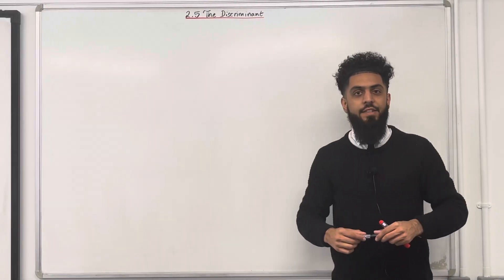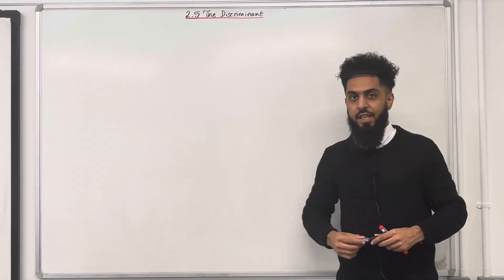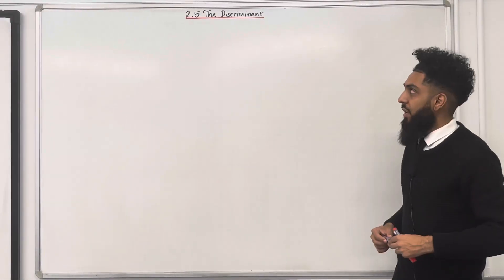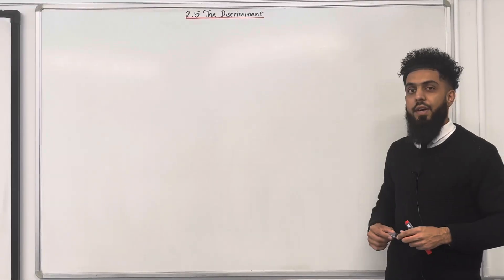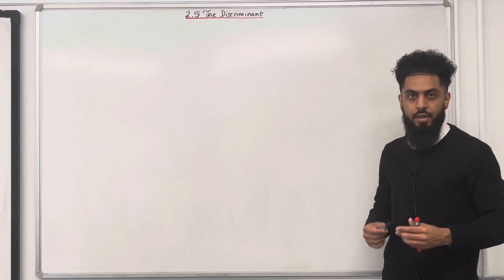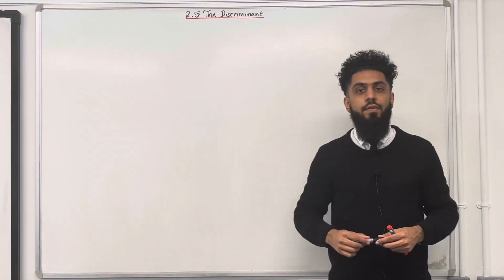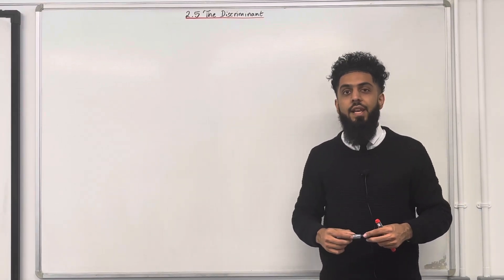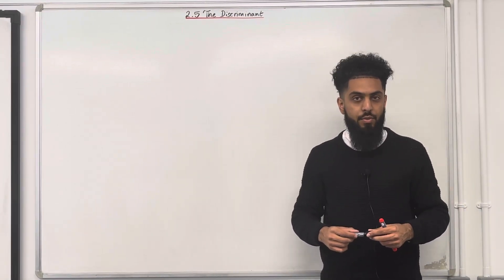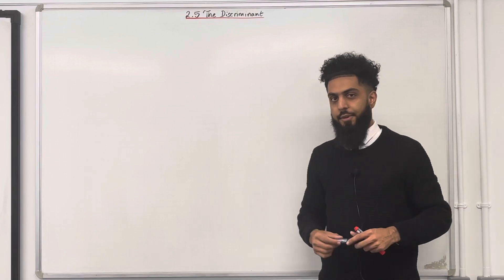Welcome back ladies and gents. In this particular teaching video I'll be looking at 2.5, the discriminant. 2.5 represents chapter 2, section 5 of the Pearson A-level Pure Maths Core 1 textbook.